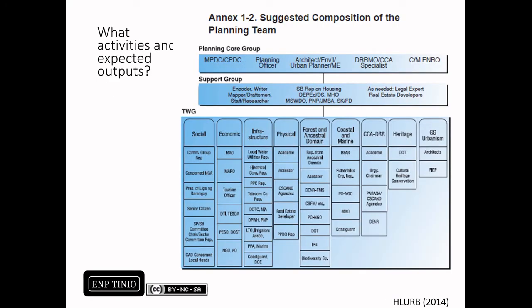An important output of this initial step is the composition of the planning team. The planning team has a core group which in most municipal and city governments is led by the municipal planning and development coordinator. In most cases, it is the MPDC or the CPDC that initiates the land use planning process. Also included are the RRMO or CCA specialist, which is important in mainstreaming disaster risk reduction and climate change adaptation.